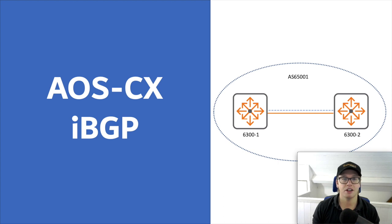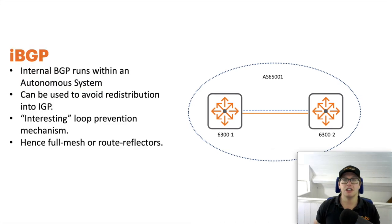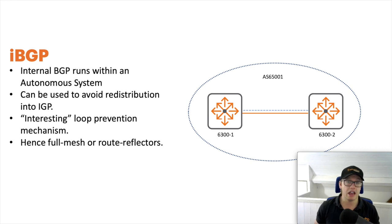Hello, Joe Neville here, back with another AOS CX basics video. In this one we are going to be configuring internal BGP. Internal BGP, or iBGP, gives you BGP's focus on scalability, control and filtering, but it runs within an autonomous system, or AS for short — that's a group of devices under the same management.